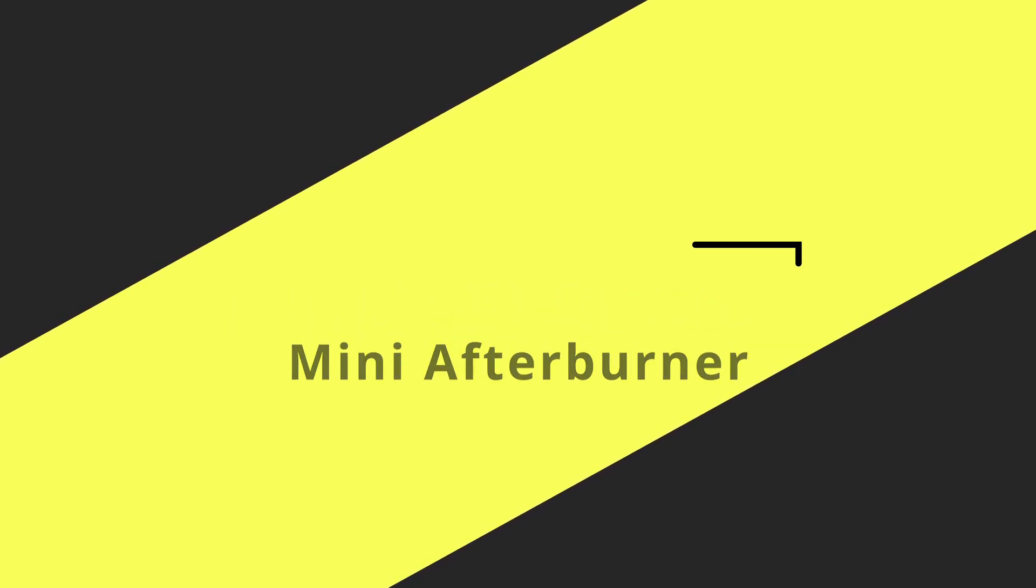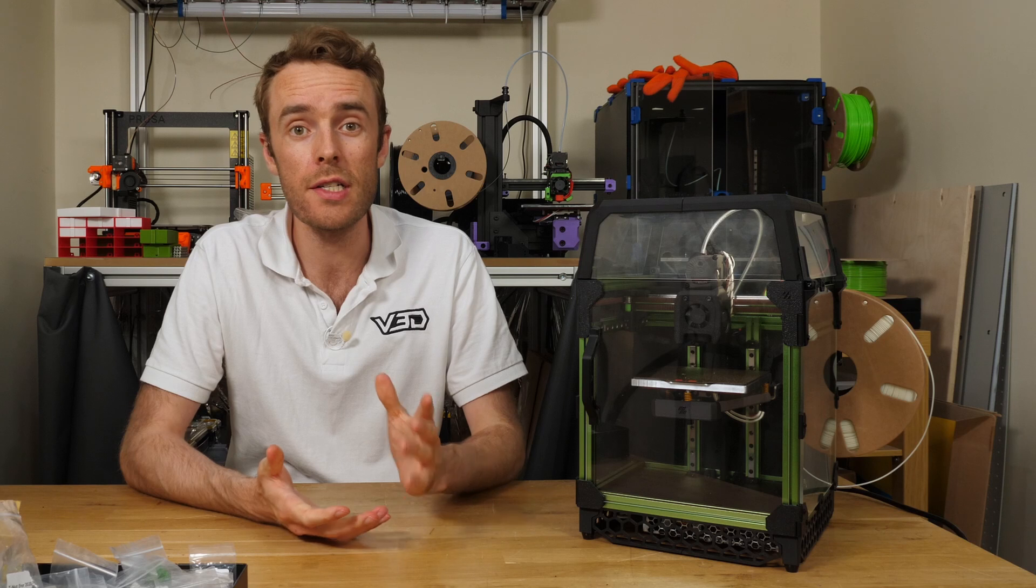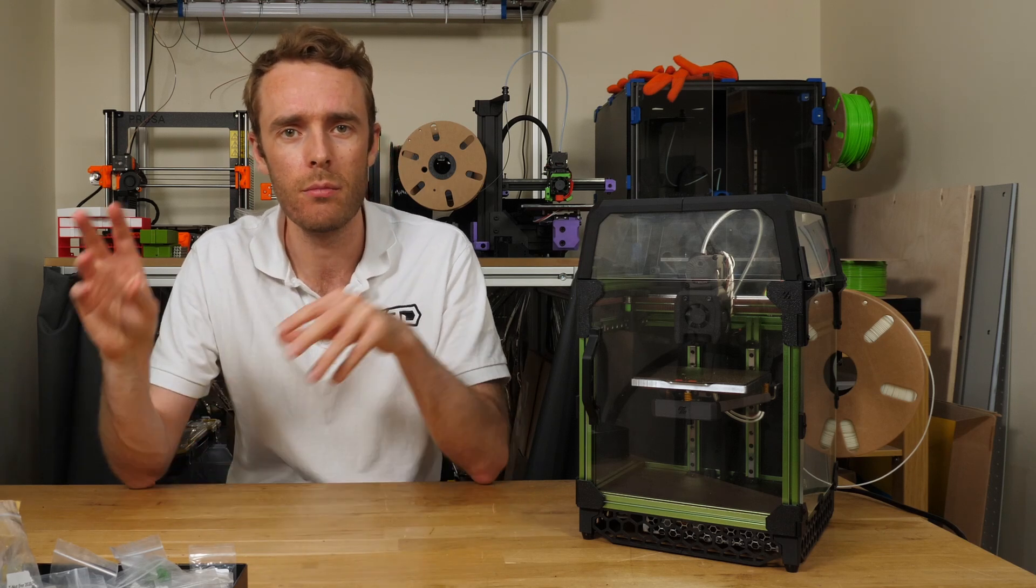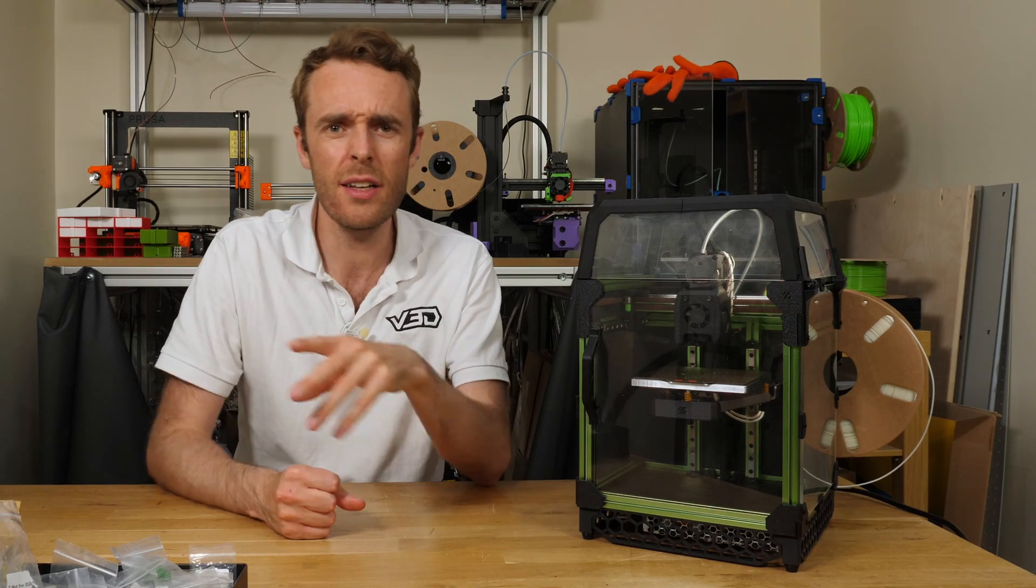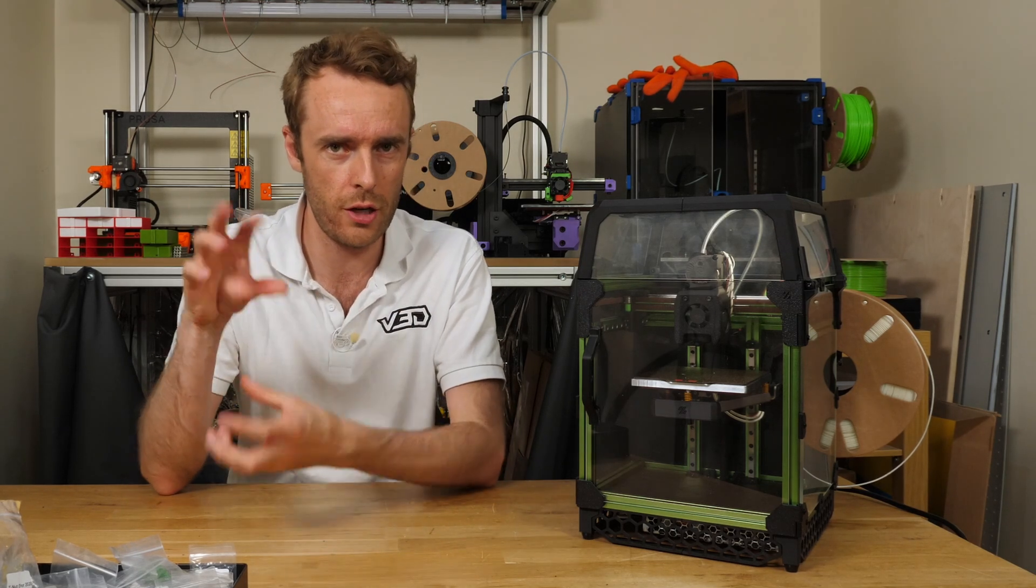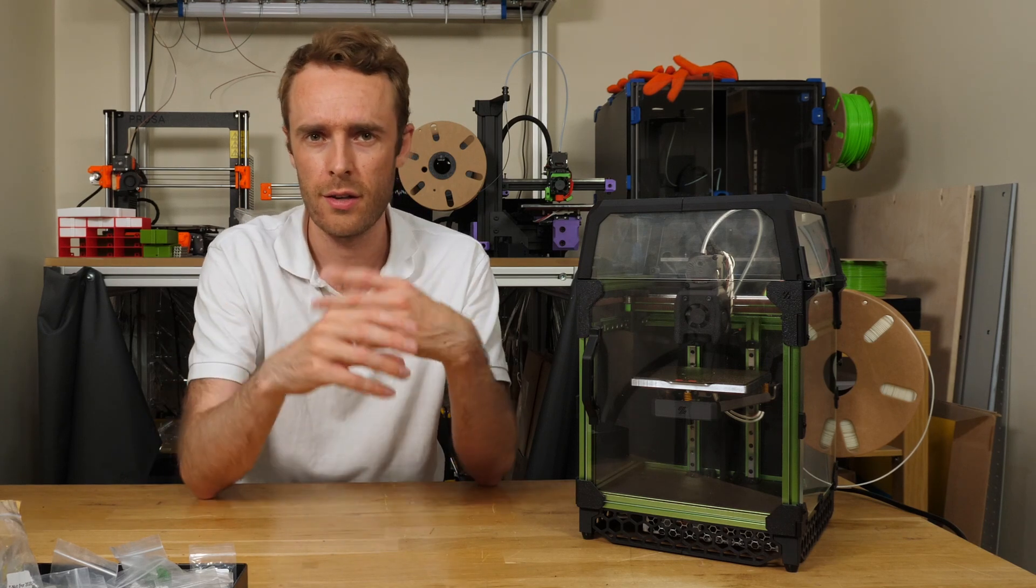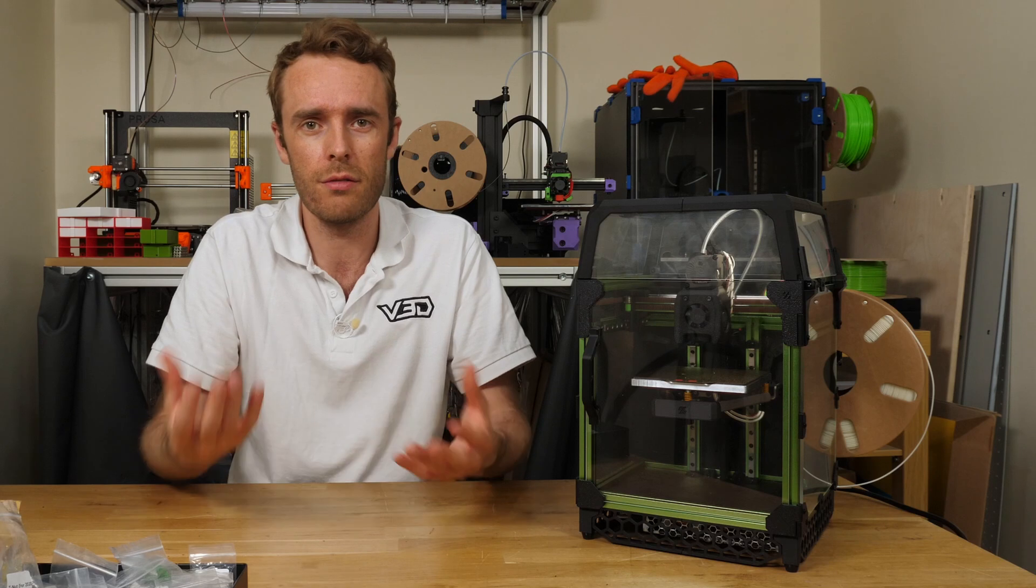The extruder hot end and part cooling fan on this printer is known as mini afterburner. So cool because it's like afterburner, but mini. It's actually a little bit different because afterburner is just the cooling arrangement on the big extruders, the actual extruder itself is called clockwork. Some people don't know that, but there you go.